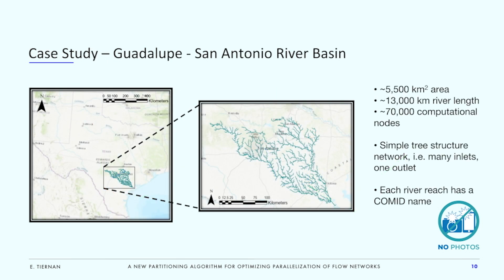To see how BIPQUIC performs on a large flow network, we chose the Guadalupe–San Antonio River Basin as a case study. This network comprises a 5,500-kilometer area of central Texas and contains around 70,000 computational elements. It is worth noting that the river network is named using the USGS Comid classification, which is less arbitrary than other naming conventions, so we can expect partitioning based on the Comid name will perform better than a random sort.